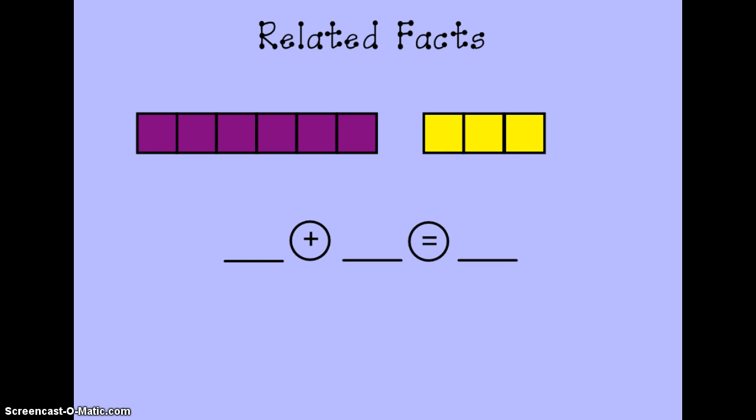Let's take a look at the cubes on the screen. You'll see that I have six purple cubes and three yellow cubes. This week we've been working on something very similar and we've been writing addition sentences to represent those cubes. So the addition sentence for these cubes would be six purple cubes plus three yellow cubes equals nine cubes total.